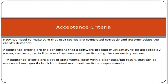Acceptance criteria are a set of statements, each with a clear pass or fail result, that can be measured and specify both functional and non-functional requirements. For example, if the requirement is that a customer must enter a user ID and password to access the application, the acceptance criteria would be that the customer must be logged in successfully when they enter the correct ID and password. That is what we think of as acceptance criteria.